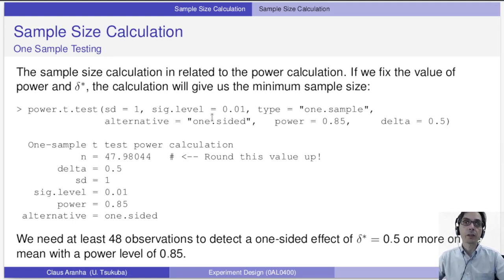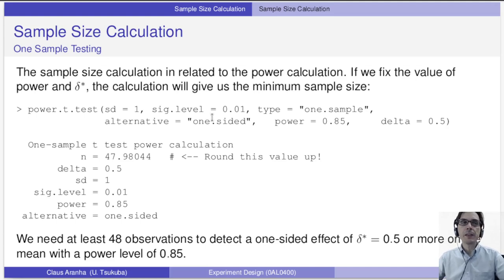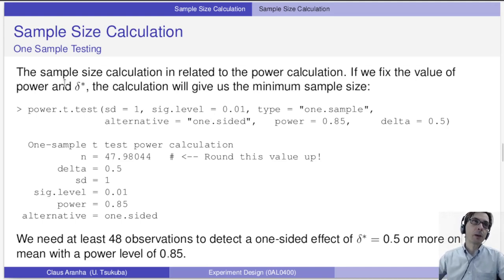To calculate the sample size, it will depend on what kind of test we are doing. For a one-sample test, the sample size calculation is related to the power calculation. If we fix the value of power and the value of delta — the value of relevance — the power t-test calculation will give us the minimum sample size.